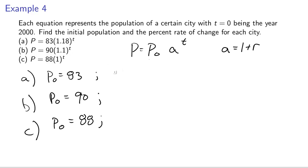So in problem a, our city is growing by 18% per year, because t is in years. So 18% per year. In part b, our city is growing by 10% per year. 0.1 is 10%, so 10% per year, so it's growing a little bit slower than city A, and city C is actually not growing at all, 0% per year.